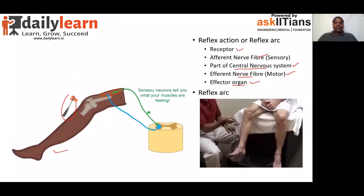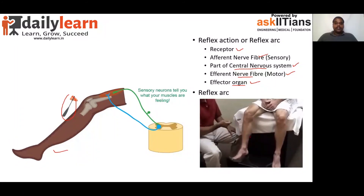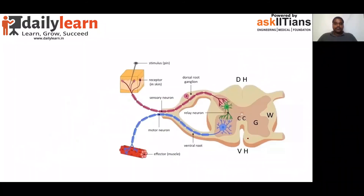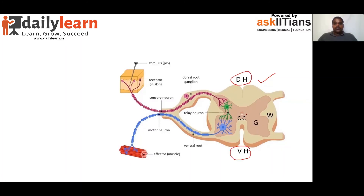Now we can get a detailed study of Reflex Arc. It actually involves the structure of the spinal cord. The structure of the spinal cord involves the dorsal horn, the ventral horn, the central canal — which is the gray part — and the white matter part. These are the parts of the cross-section of the spinal cord.